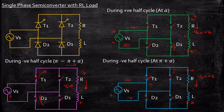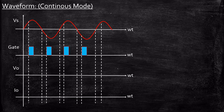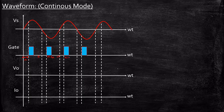Now why is all this analysis important? It is extremely important because if you remember all these points during operation, it is straightforward to draw the waveforms. This waveform is assumed for continuous mode — when I say continuous mode it means a very large value of inductor is chosen. Let us consider a sinusoidal voltage source with some cycles, and a gate pulse is applied at every instant: from alpha, then pi, then pi plus alpha, then 2 pi, then 2 pi plus alpha, and the cycle repeats.